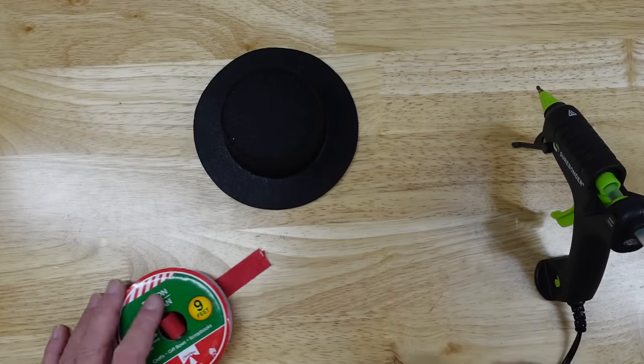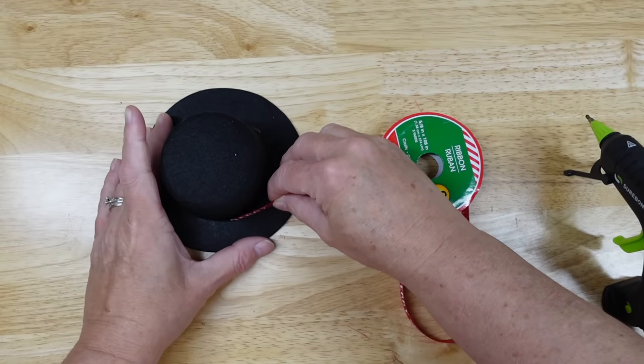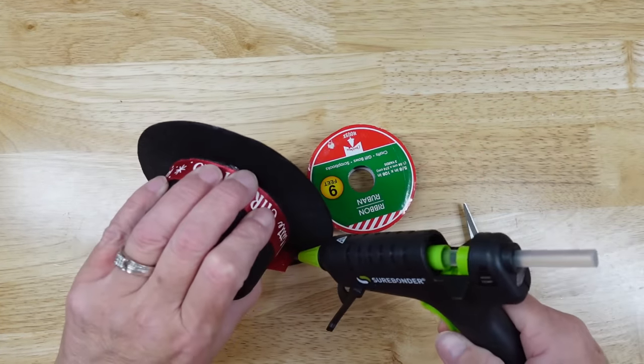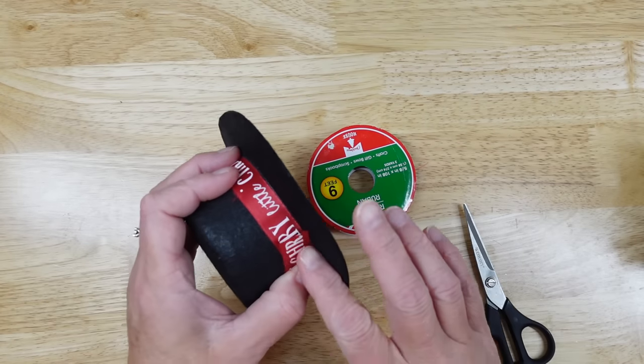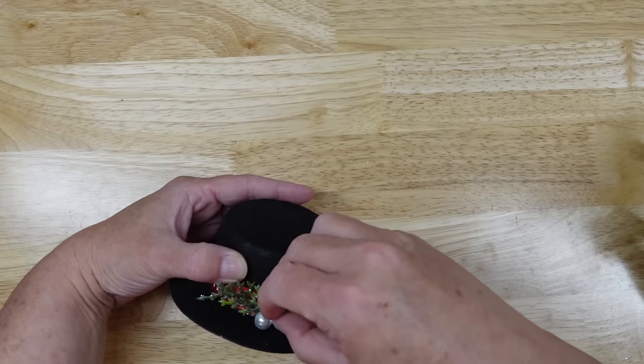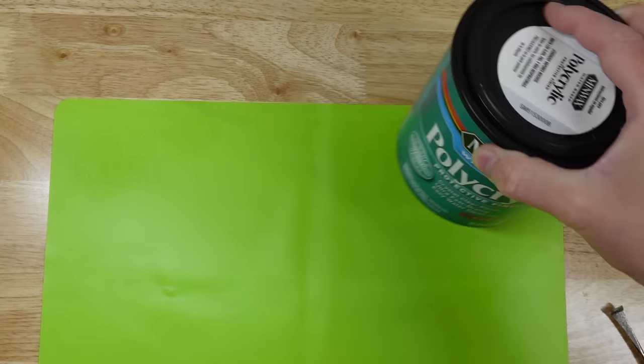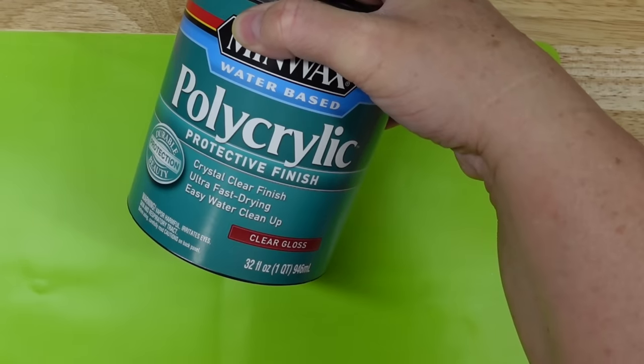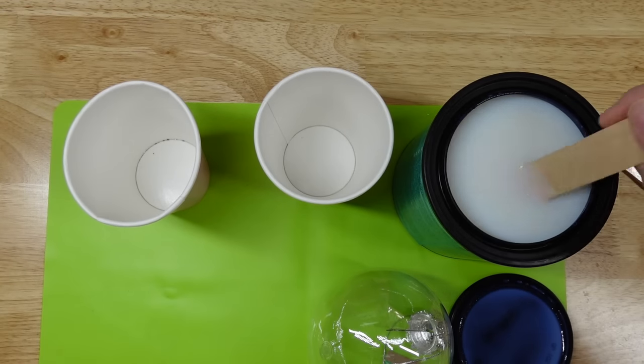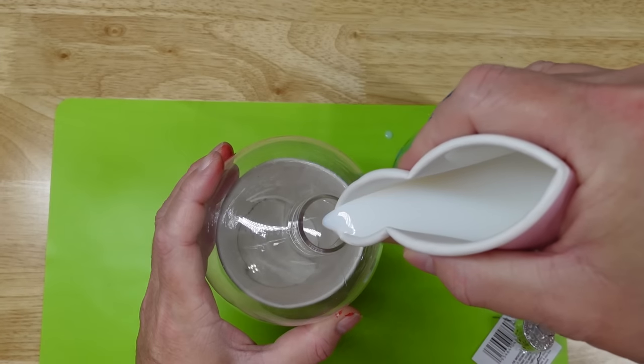For this ornament, I got a top hat from the doll section at Hobby Lobby. And I glued a strip of ribbon that I got from the Dollar Tree around the brim of the hat. Then I added two pieces of greenery and some silver foam balls to the center. Now for the actual ornament, I used the Minwax's water-based polycrylic in clear gloss. Once I opened it up, I gave it a gentle stir so that I wouldn't get any air bubbles. Poured some into a cup and then used it to pour into the ornament.